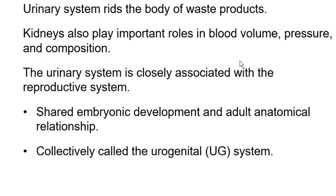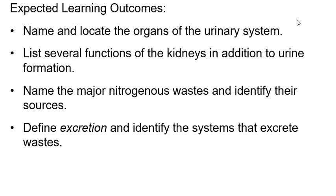Some books call this the urogenital system instead of just the urinary system, because it's really hard to separate the two. The reproductive system is intimately connected to the excretory system. For example, a man can either ejaculate sperm or urinate, but not both at the same time — if he tries, the sperm often go up into the bladder instead of out.